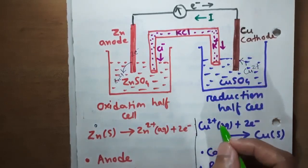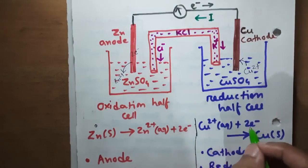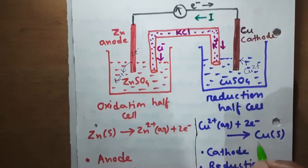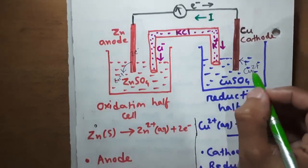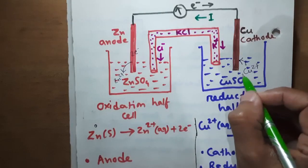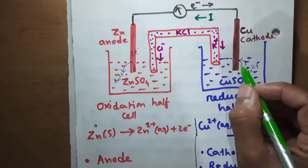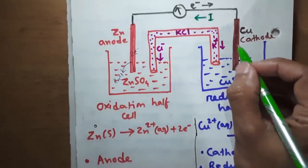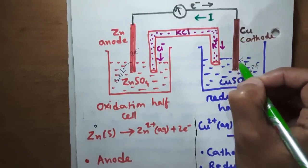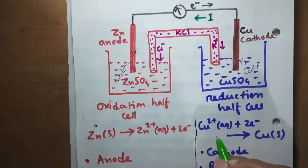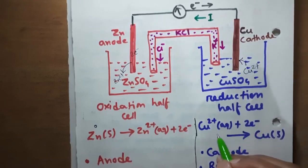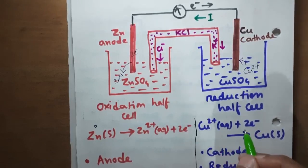In this half cell, copper 2 plus ions will take two electrons and convert to solid copper. That means the copper 2 plus ions will deposit on the copper electrode. It will be reduction because there is a decrease in oxidation number.